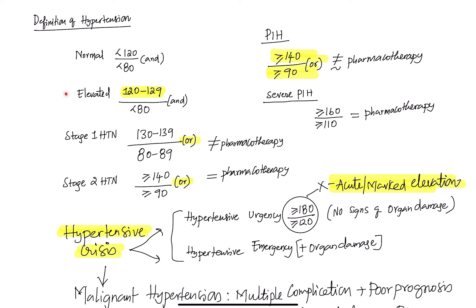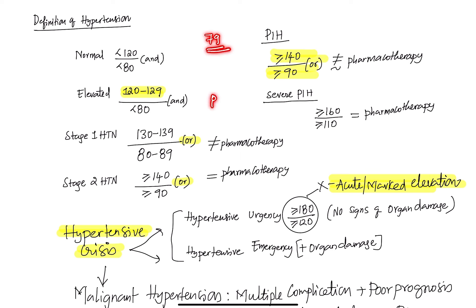Elevated BP is not an emergency and does not require treatment — it may be due to sympathetic causes, stress, or running. Elevated BP is 120 to 129 mmHg systolic. Note that the diastolic BP is not part of the elevated category. The diastolic normal is 79 or less. Any elevation in diastolic BP is a worrisome thing, whereas systolic BP can be elevated due to multiple physiological causes.